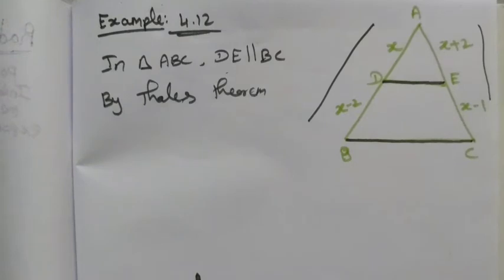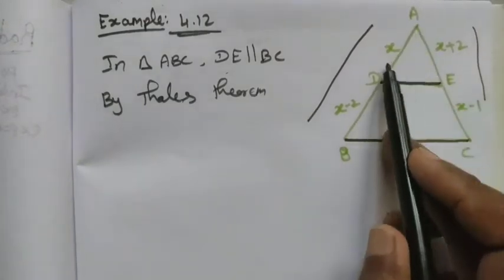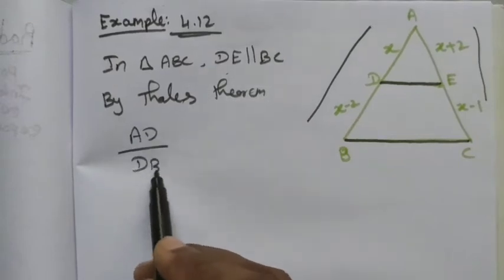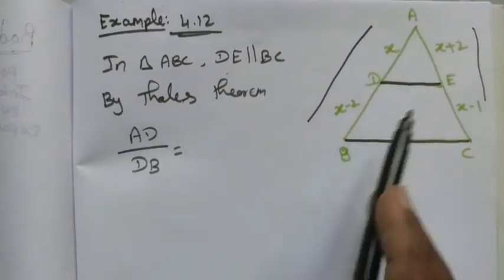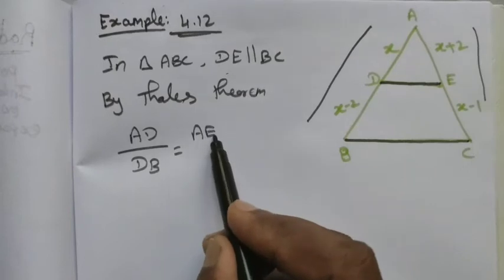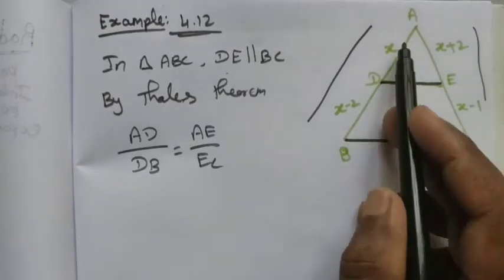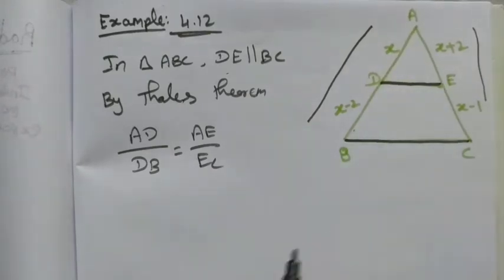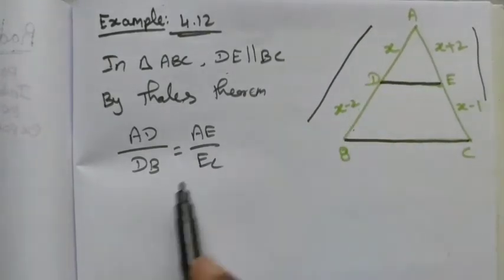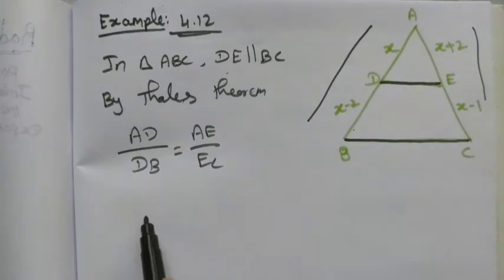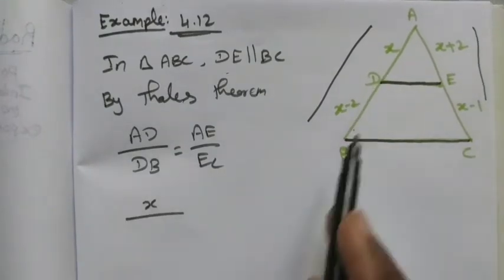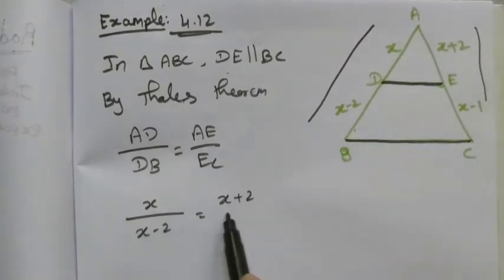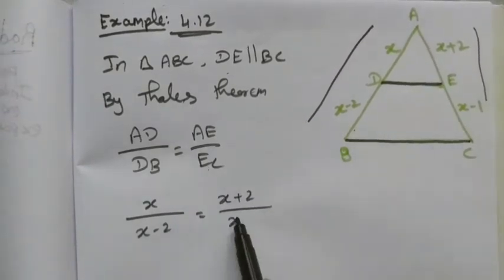The BPT formula is AD divided by DB equals AE divided by EC. Now we apply the given values: AD is x, DB is x minus 2, AE is x plus 2, and EC is x minus 1.